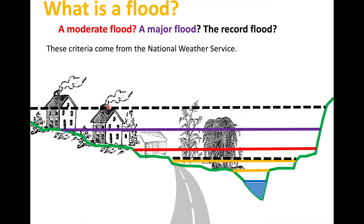To summarize: the definition of a flood to a hydrologist and geomorphologist is water outside the channel and on the floodplain. The National Weather Service definitions are based on damage to property and hazard to people. And when you hear the term 'record flooding,' the question you should immediately ask is: what record, how long, and what range of conditions are recorded in that record.